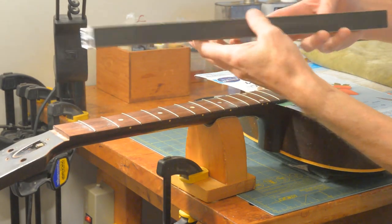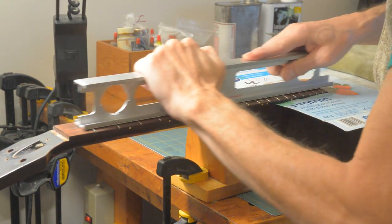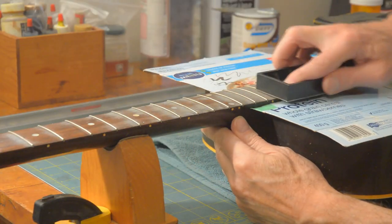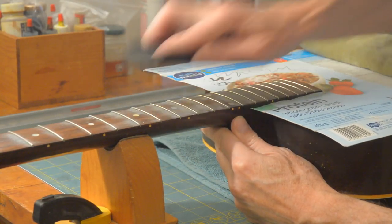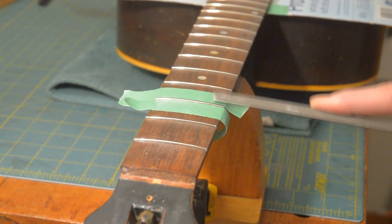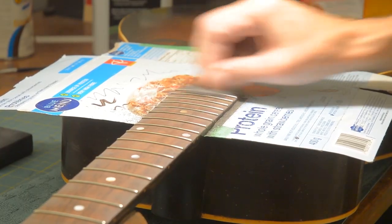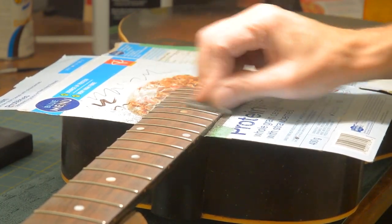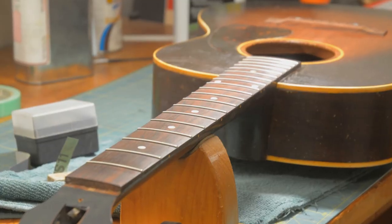Now I have to level the frets. Diamond block in use here. And then the three cornered file to crown them. Some steel wool to give them their final polish. And that's it.